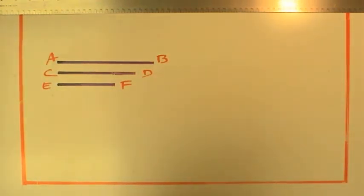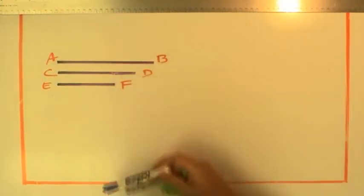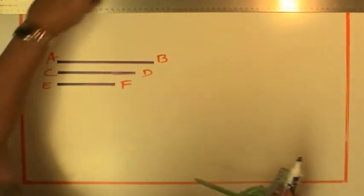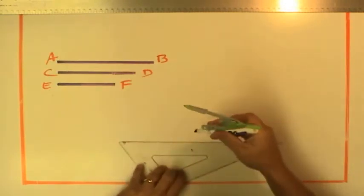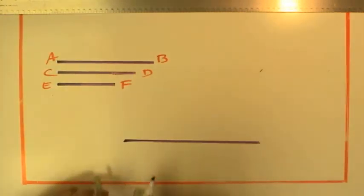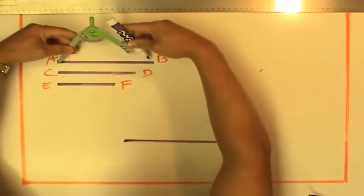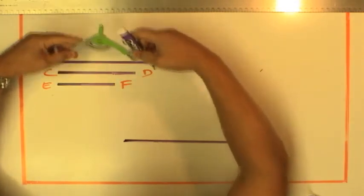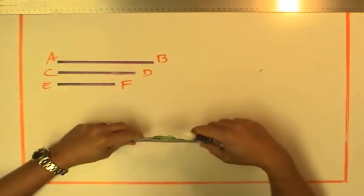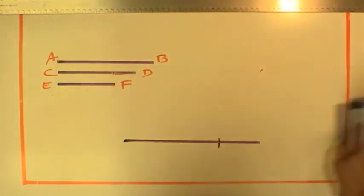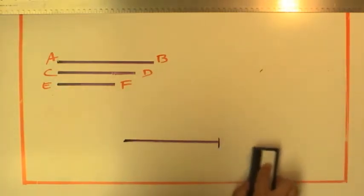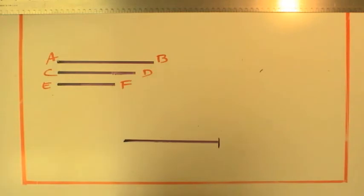We're going to construct a triangle by triangulating these three distances. We're given three distances, and we want to construct a triangle from those distances. First, we'll get the length AB and cut our line off at that length. So that's length AB.